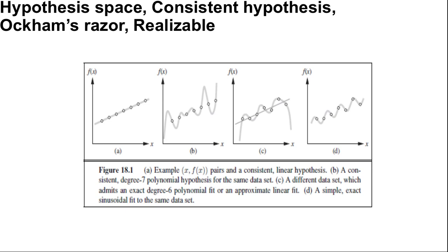Figure c shows a second data set. There is no consistent straight line for this data set. It requires a degree 6 polynomial for an exact fit. There are just 7 data points, so a polynomial with 7 parameters does not seem to be finding any pattern in the data, and we do not expect it to generalize well.